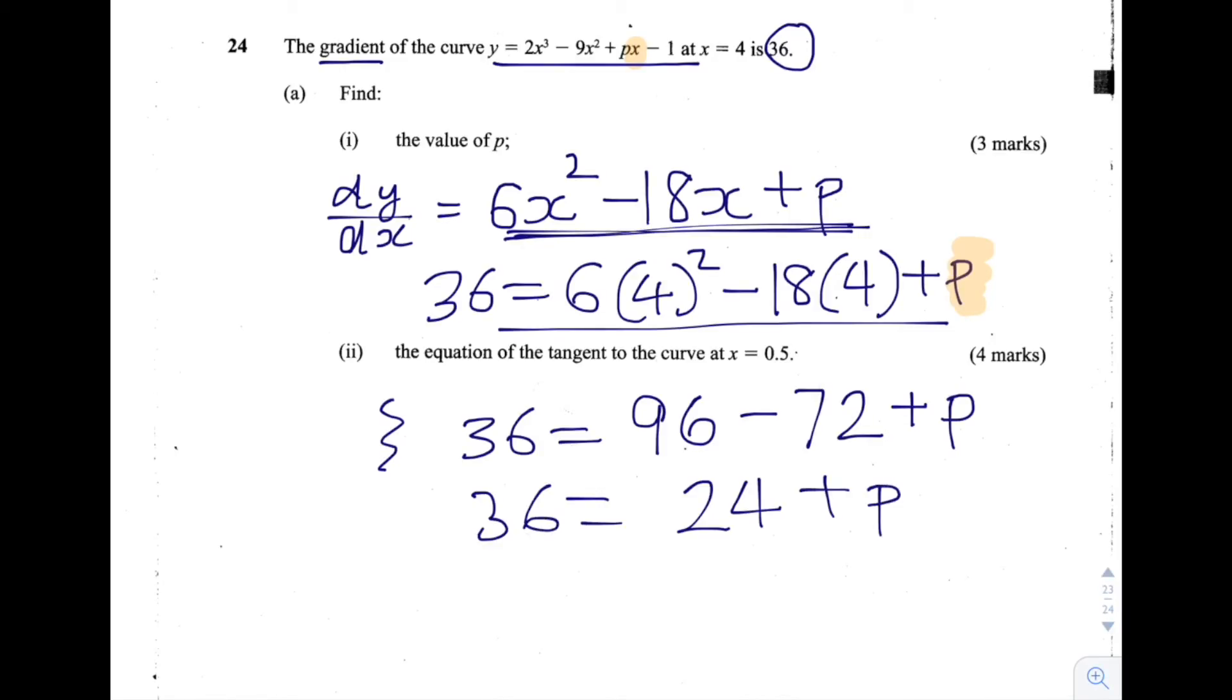Let's subtract 24 from both sides. We get 36 minus 24 is equal to p. 36 minus 24 is 12, so p is equal to 12. So the answer to the first part, 24a part 1, is p is equal to 12.